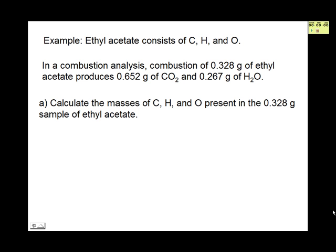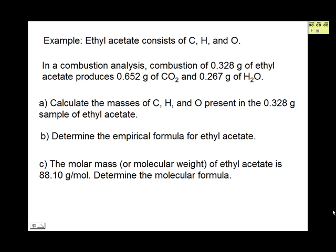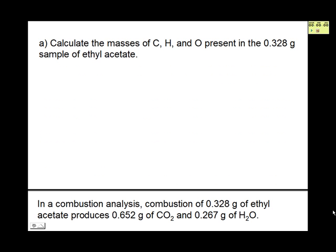Our first task is to calculate the masses of C, H, and O present in the sample. Using these, we can then determine the empirical formula. Lastly, we are given that the molar mass of the compound is 88.10 grams per mole, and we need to find the molecular formula. Now we will work through each one of these steps, starting by calculating the masses of C, H, and O in the given 0.328 gram sample.